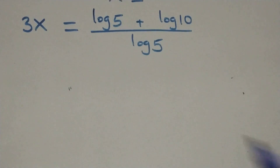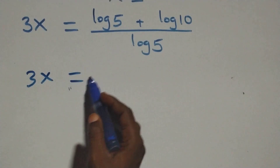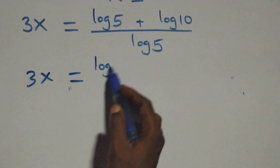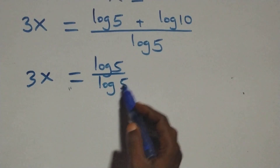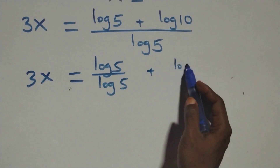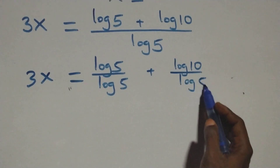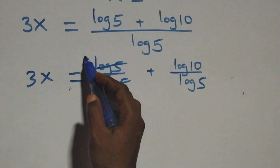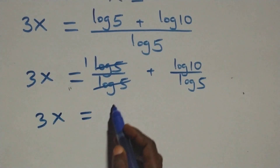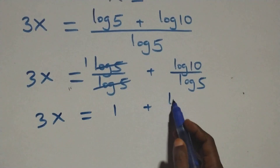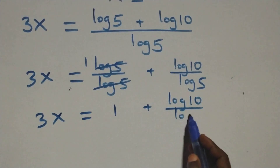At the next step, we separate this into two fractions: 3x equals log 5 over log 5, plus log 10 over log 5. Since log 5 over log 5 cancels to give 1, we have 3x equals 1 plus log 10 over log 5.